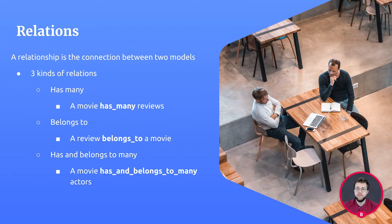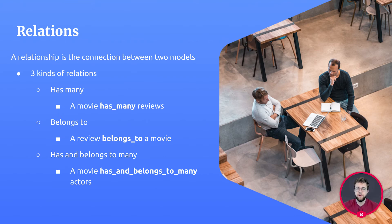The other item within your data model is relations. A relationship is the connection between two models. By creating a relationship, we can get data from one model to another. A small example would be when we have a model with employees that has a relationship with the teams model. We can, when we're building our application, get data from an employee and see in which team he is because there is a relation. If there was no relationship between the two models, then there's no way to tell if the employee belongs to a certain team or not.